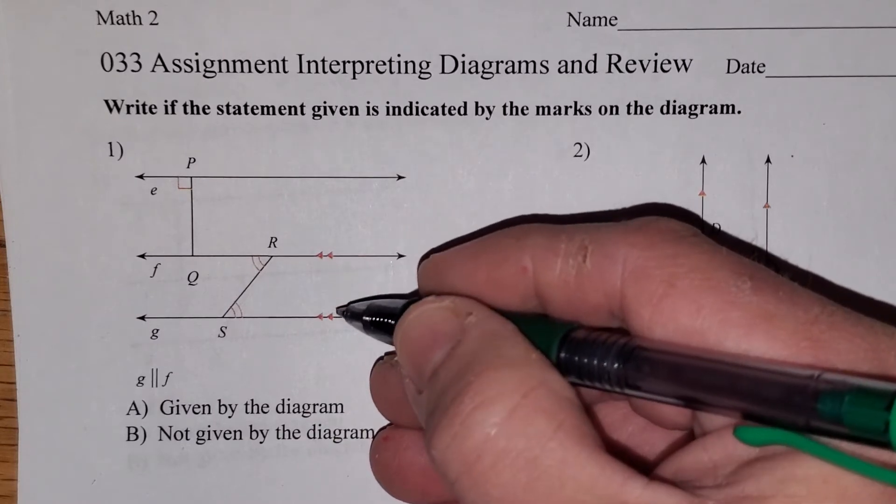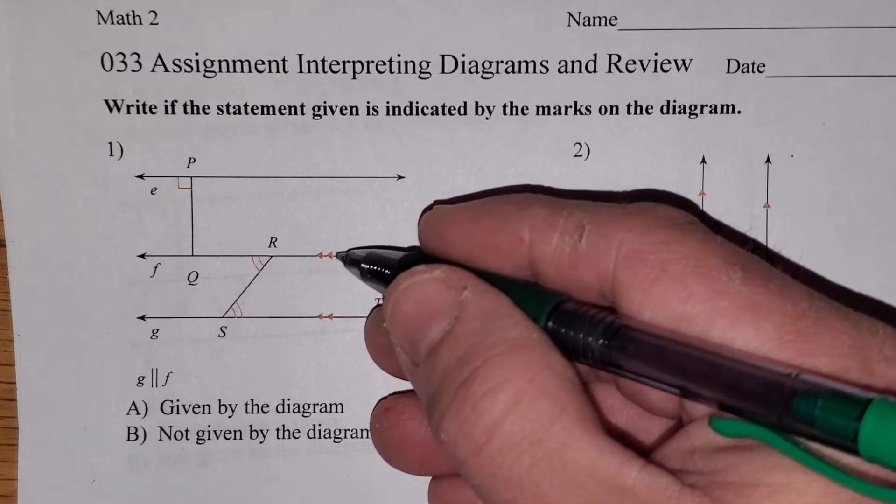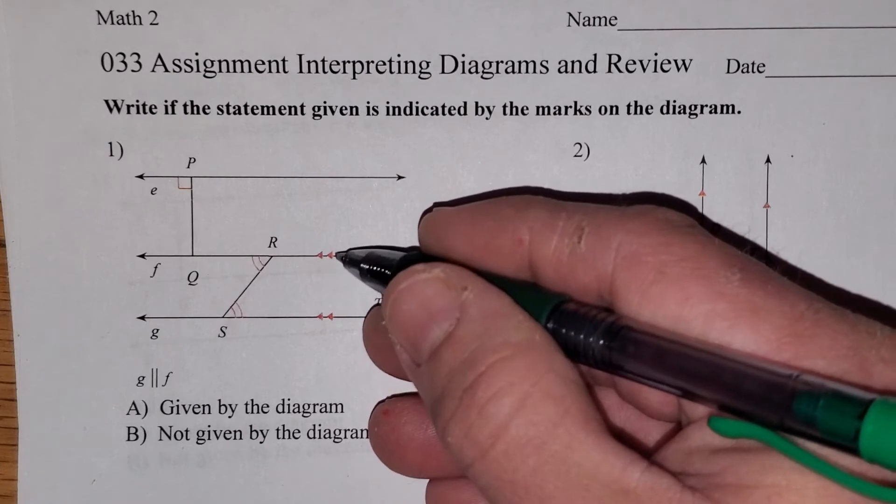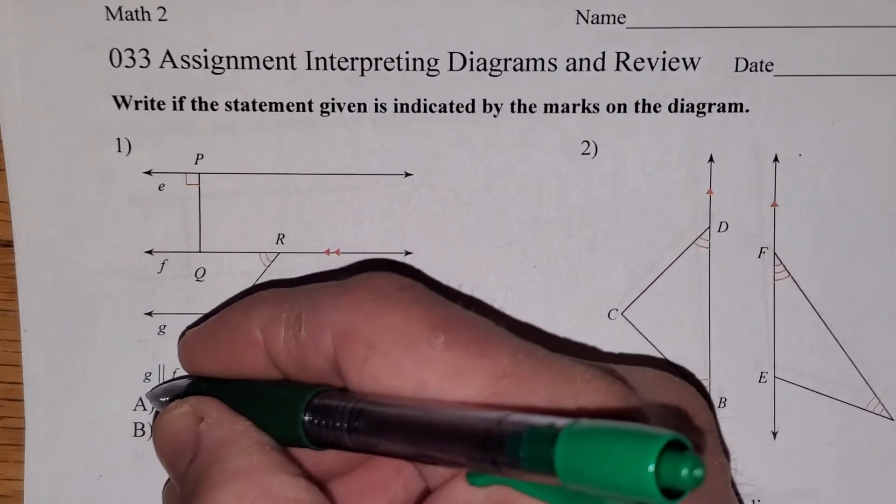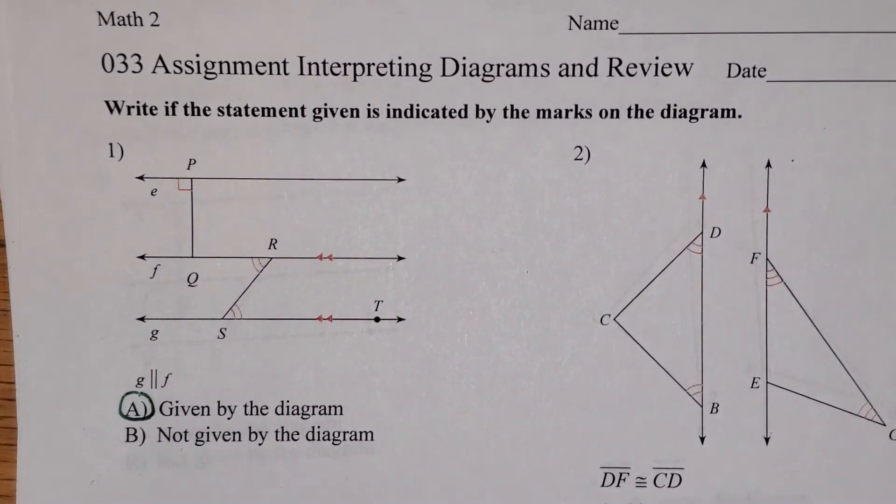They gave us that information in the way of these arrows. When you see these arrows, that means that they are parallel. They could have used one pair of arrows, or in this case, they used two pairs of arrows to indicate this pair of lines are actually parallel. So this actually is given enough information by the diagram to know that that's true.